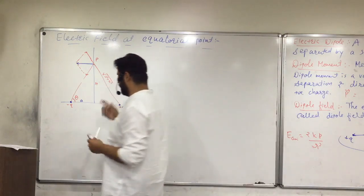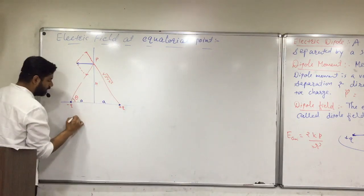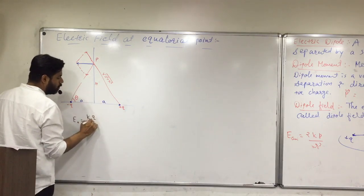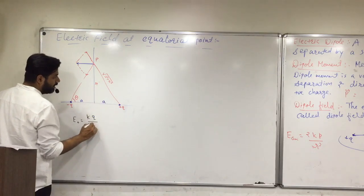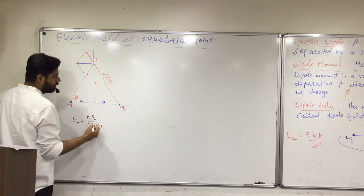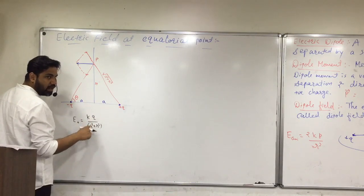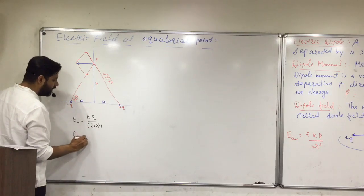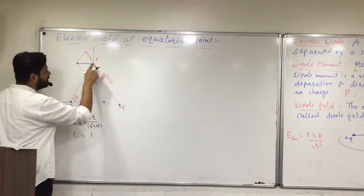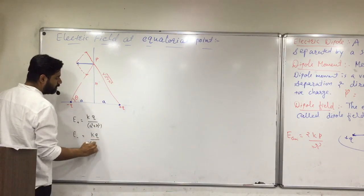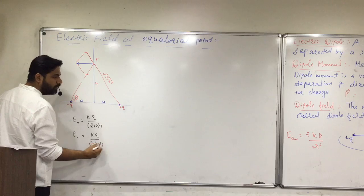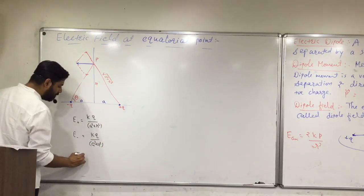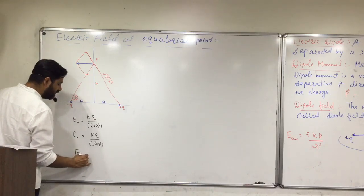So we can say that E positive will be kq upon (a squared plus r squared). I squared it directly without keeping the square root. Now let's find E negative — which is also kq upon (a squared plus r squared). So both magnitudes are the same.